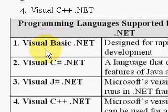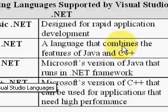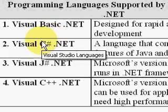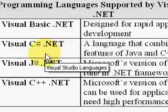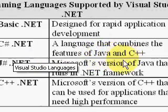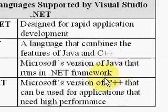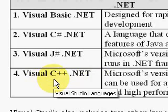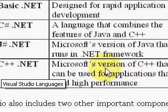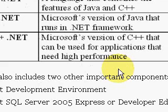The third topic is what languages are supported in Visual Studio .NET. There are four languages. First is Visual Basic .NET, which is for rapid application development. C-Sharp is a language that combines the features of Java and C++. The third language supported is J-Sharp, which is Microsoft's version of Java and runs in the .NET framework. And Visual C++ is Microsoft's version of C++, which can be used for applications that need high performance.